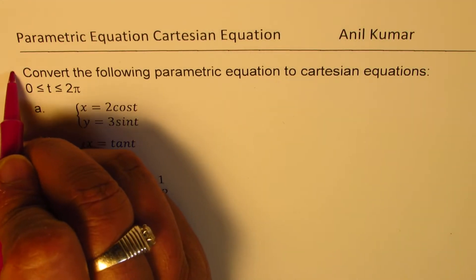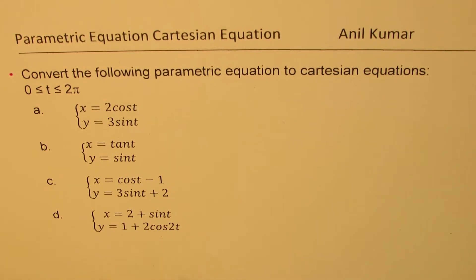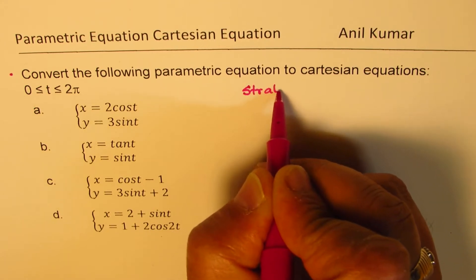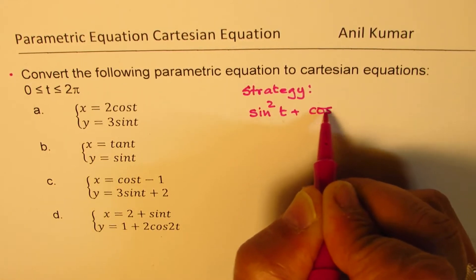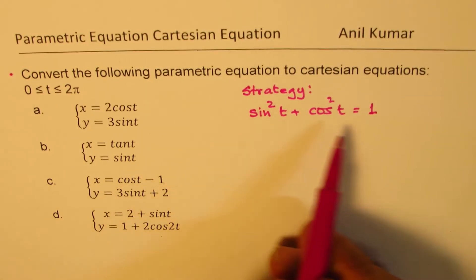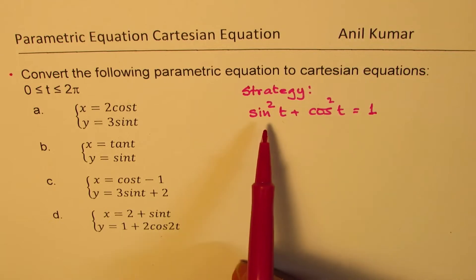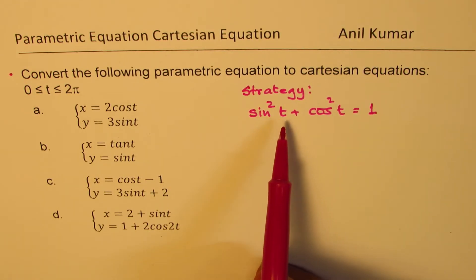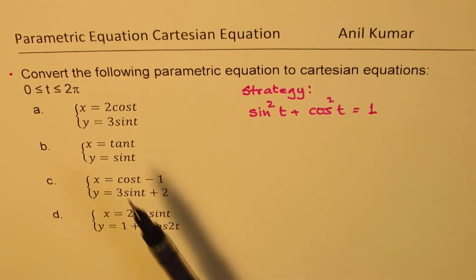The question here is: convert the following parametric equations to Cartesian equations. The value of t is between 0 and 2π, both included. Whenever we have trigonometric functions, especially with sine and cosine, we can follow this strategy: we know that sin²t + cos²t = 1. The idea is to isolate cos t and sin t, then square and add them to get 1, which eliminates the parameter t and gives us the equation in x and y.